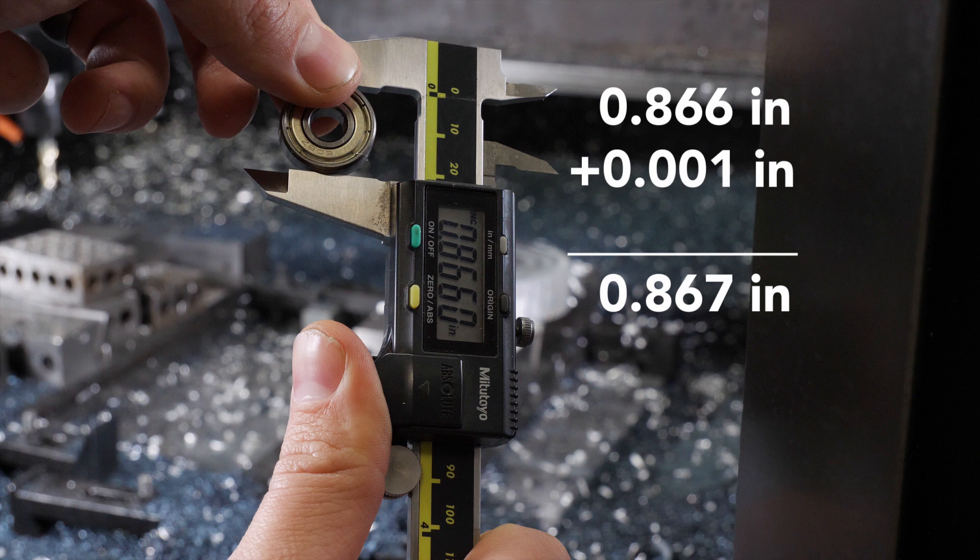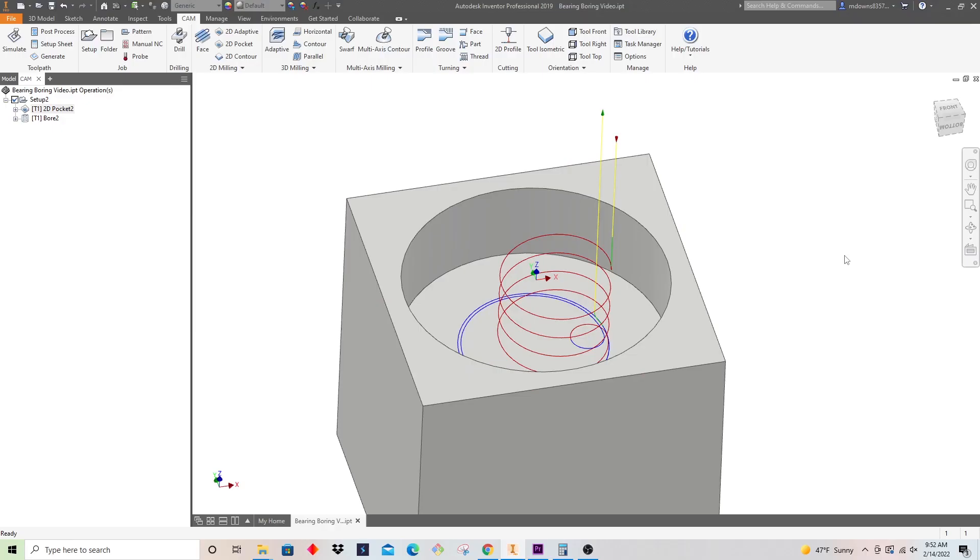So I've already gone ahead and created these two programs and I'm just going to highlight some of the things that I did in these programs. So the first one is going to be just a normal pocket. I'm just going to clear this out and I'm going to leave a little bit of stock for our boring operation.